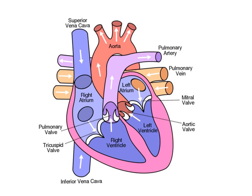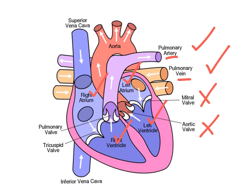We have a simple diagram of the heart here. There are certain things you need to know for your GCSE and some you don't. You need to know the pulmonary artery, the pulmonary vein, and the differences between arteries and veins. You don't need to know the mitral valve by name, but you do need to know what valves do. You need to know the left atrium, left ventricle, right ventricle, and right atrium, and where blood enters — which is the right atrium.